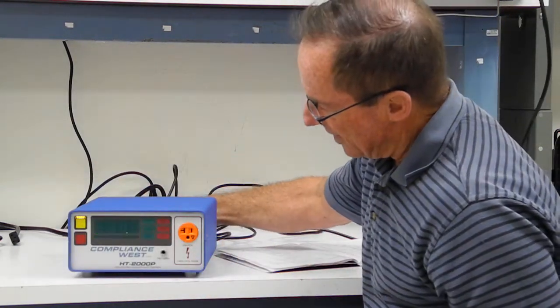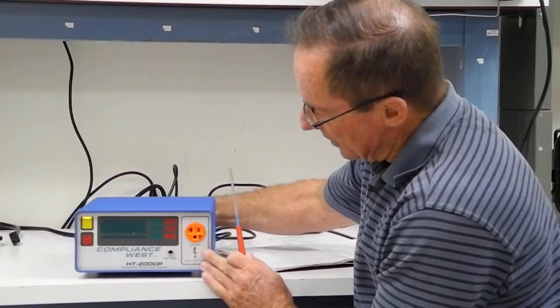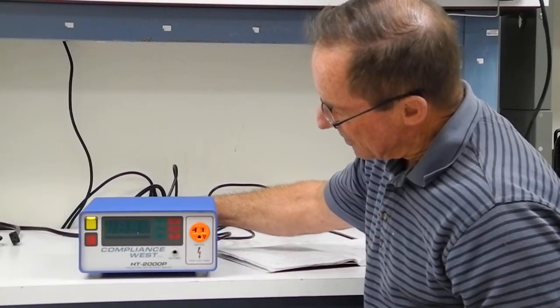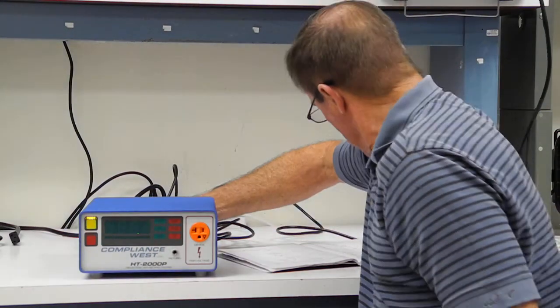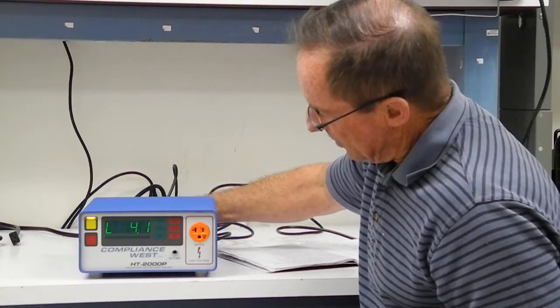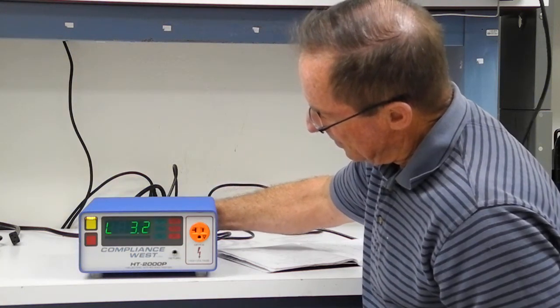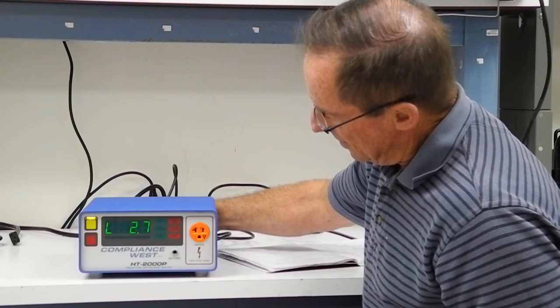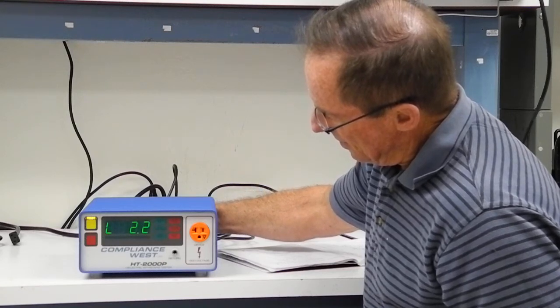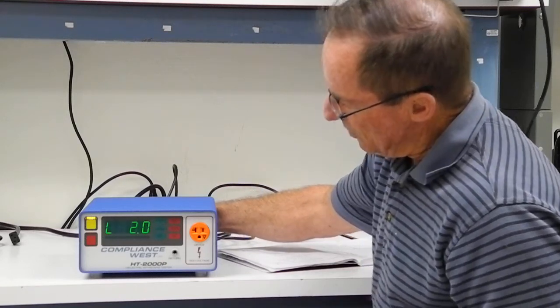On the front panel, as you turn the knob, you'll see the leakage current show up. That's the leakage current limit, so we want to set it for 2 milliamps. I'm going the wrong way here. That's it, 2 milliamps.